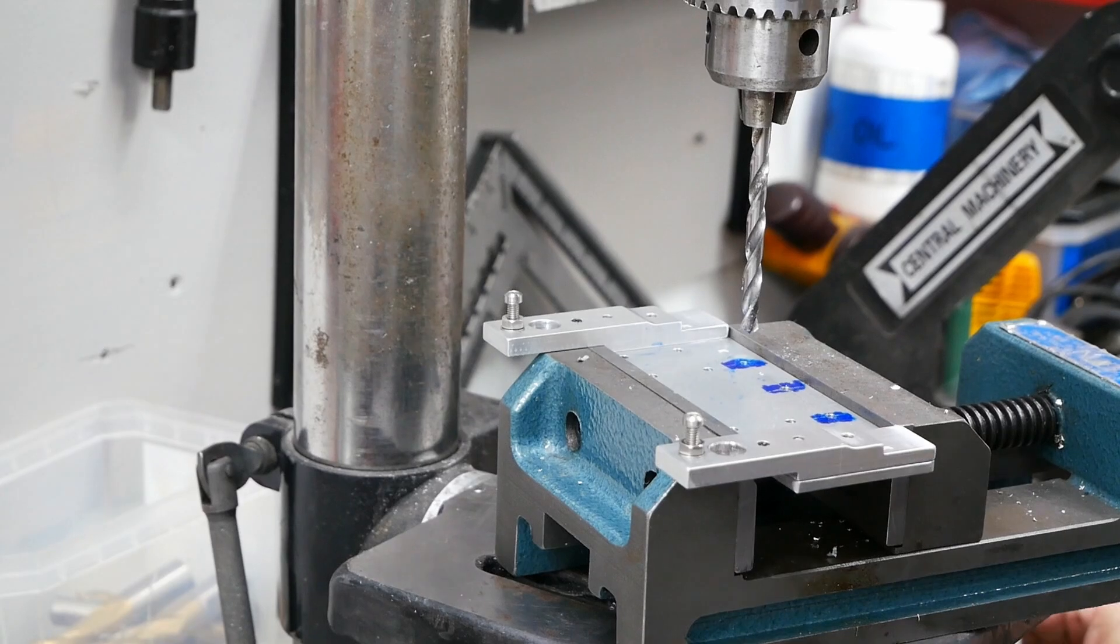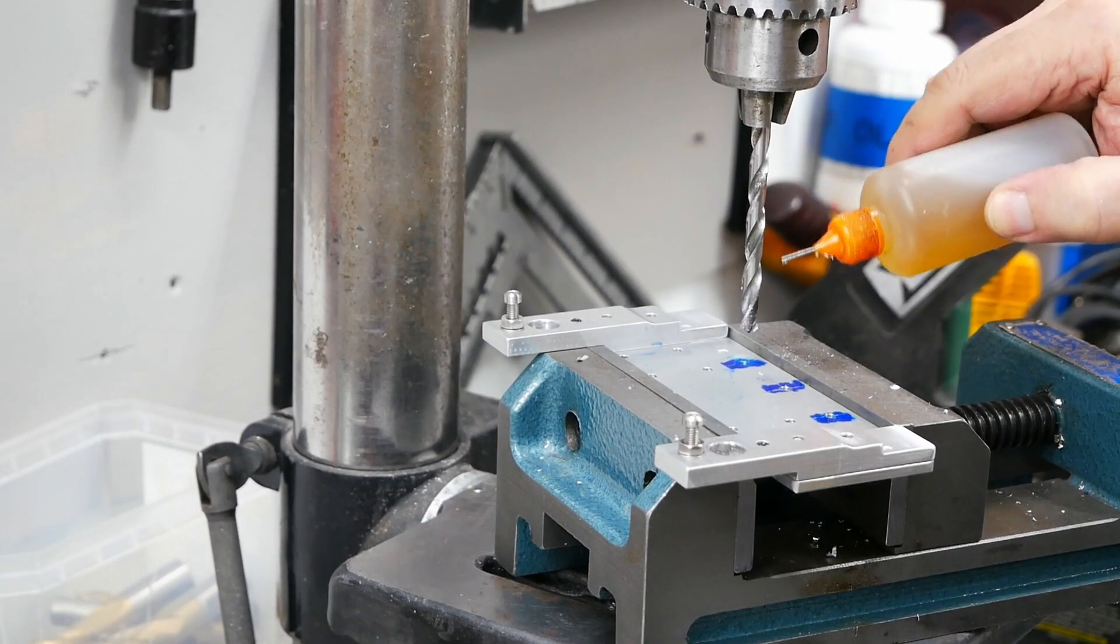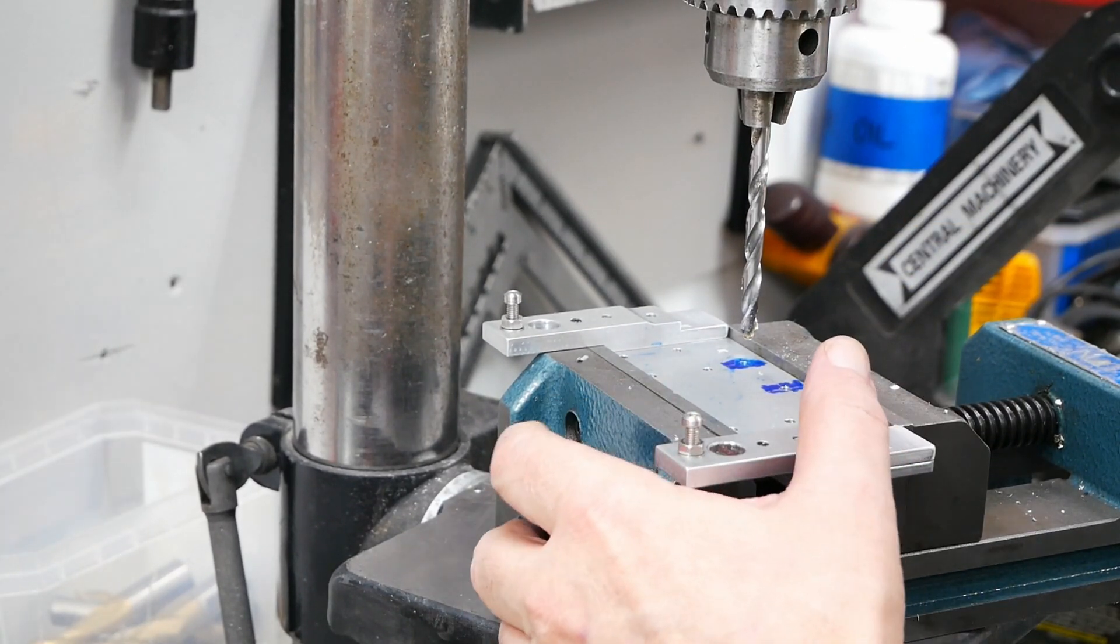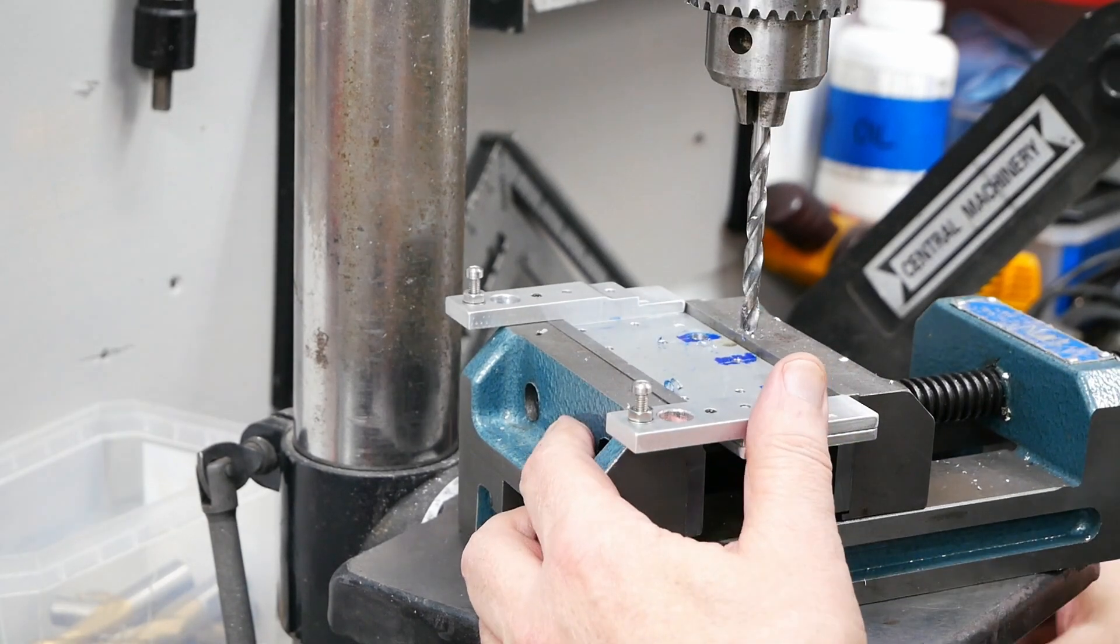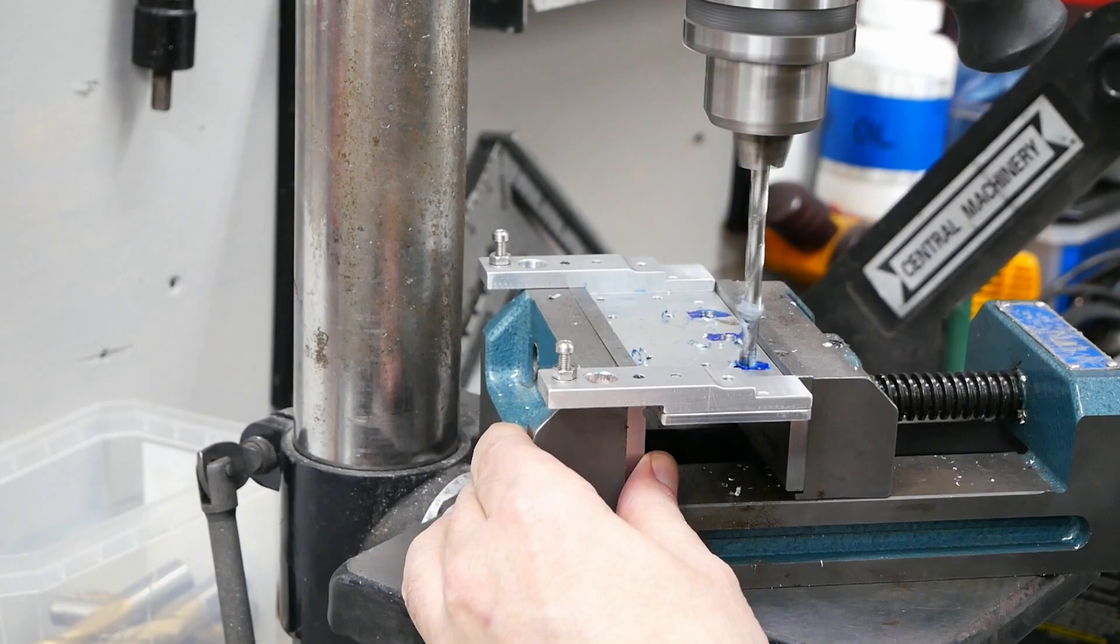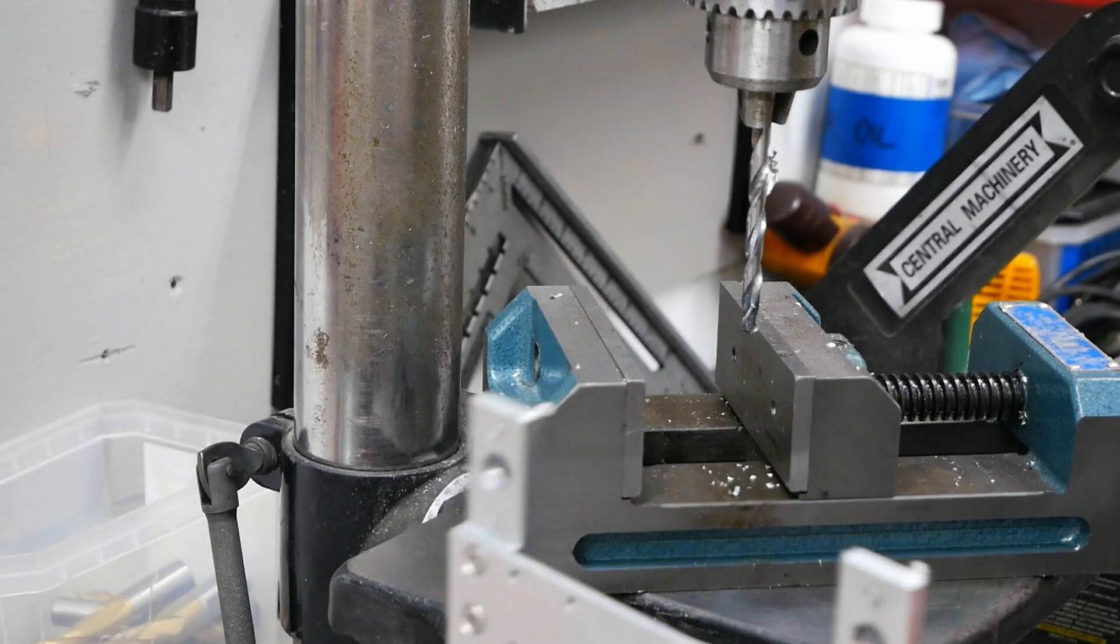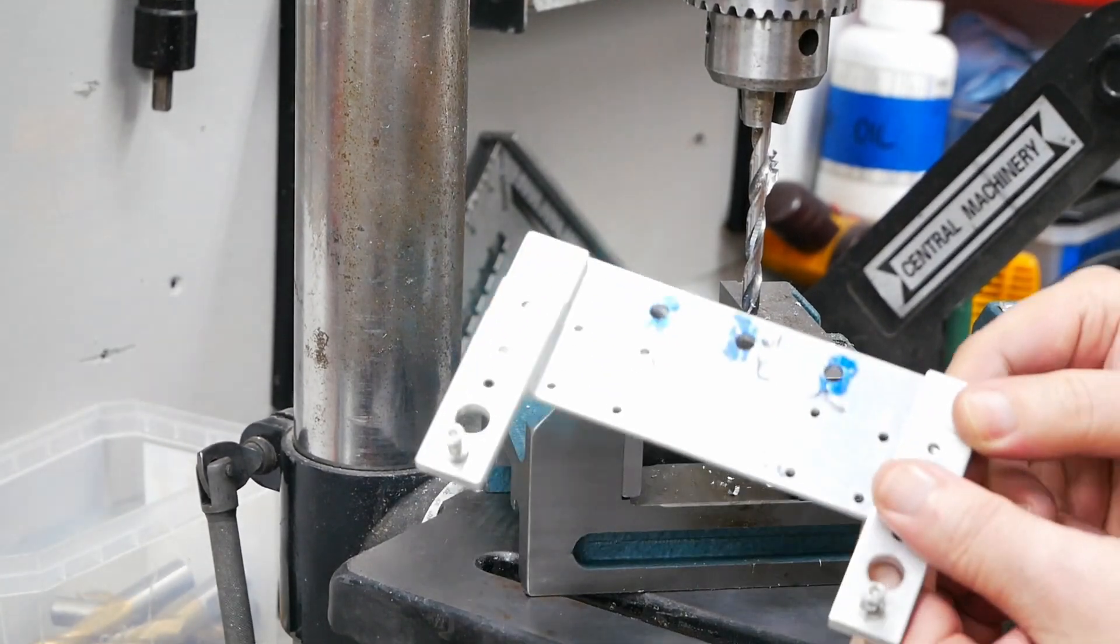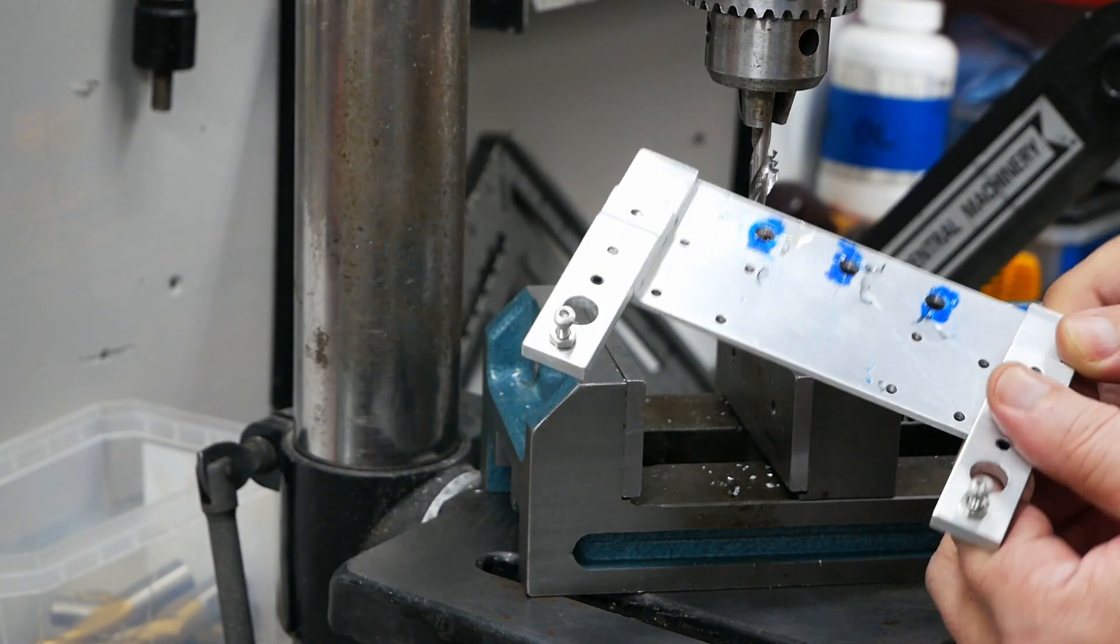So here we have the drill press. Now let's drill those three holes out. I'm gonna chamfer those and after chamfering is done, I'm now gonna go over to the assembly table.